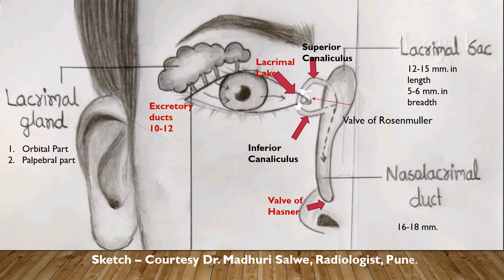As we have discussed, the lacrimal gland is situated in the supralateral aspect of the orbit. It has two parts: the orbital part and the palpebral part. The palpebral part is situated inferiorly and is slightly smaller in size. There are multiple excretory ducts — usually 10 to 12 in number — which bring tears produced by the lacrimal gland to the surface of the eye. The tears not only lubricate but also prevent physical damage of the cornea and have antimicrobial properties.